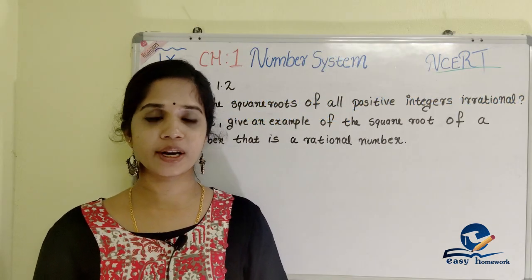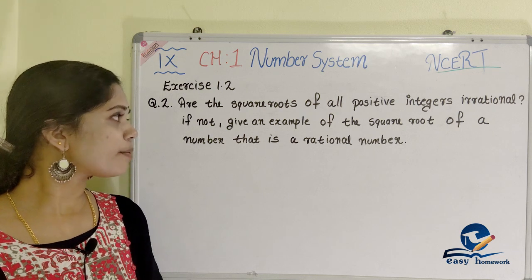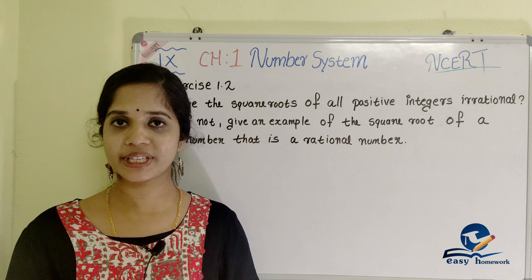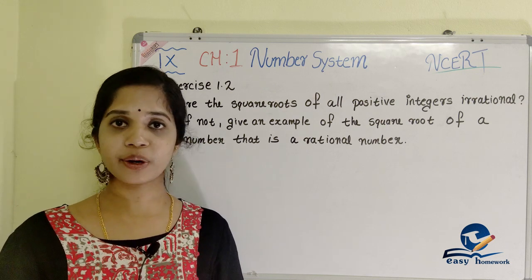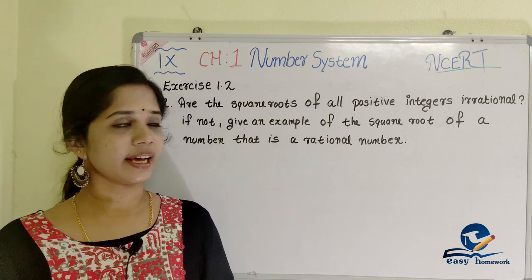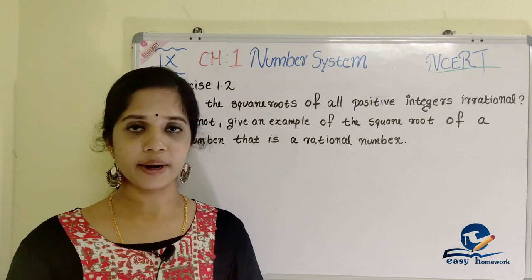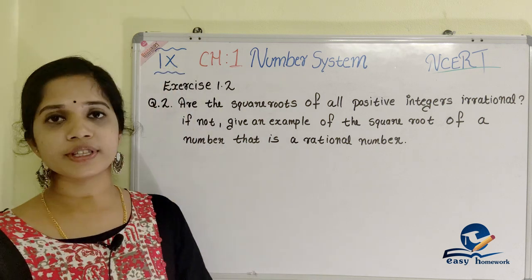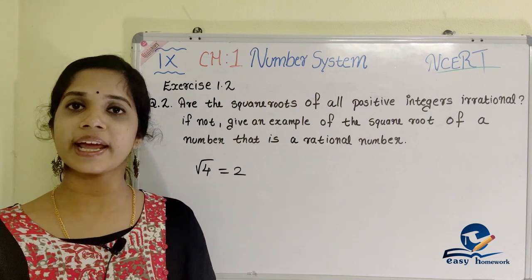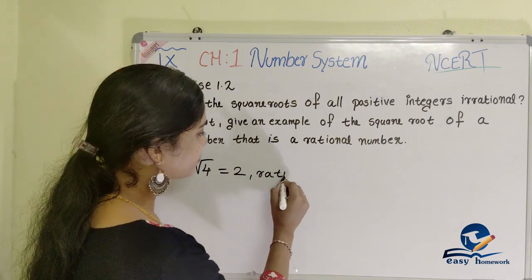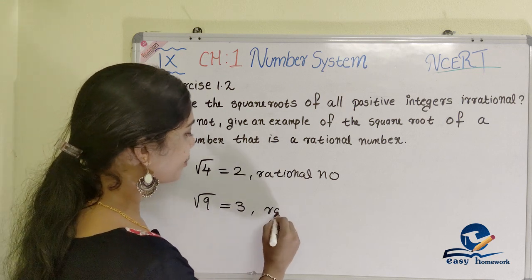Let's go to the next exercise. Exercise 1.2, second question: Are the square roots of all positive integers irrational? If not, give an example of the square root of a number that is a rational number. Let's take root 4 — the answer is 2, which is a rational number.